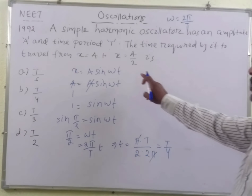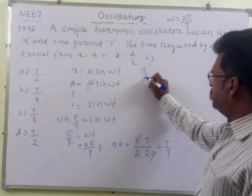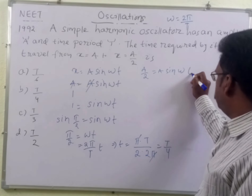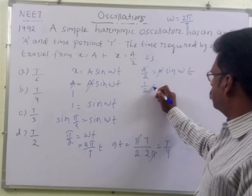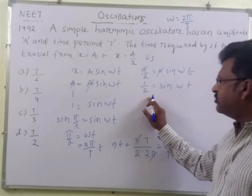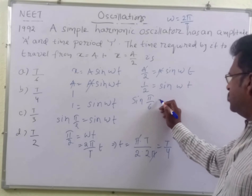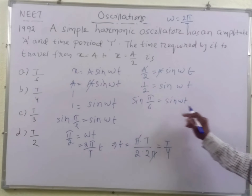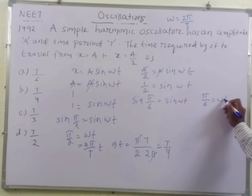The second situation is X is equal to A by 2. So we write A by 2 is equal to A sin omega T. Cancelling A by A, we get one half equal to sin omega T. What is one half? We know sin 30 degrees, or sin pi by 6, is equal to sin omega T. In that case, omega T is equal to pi by 6.